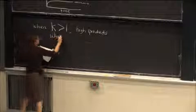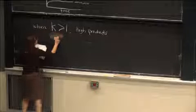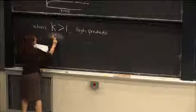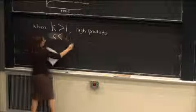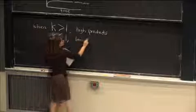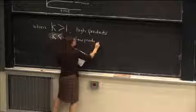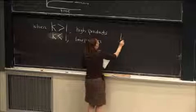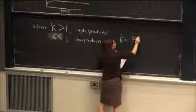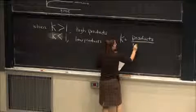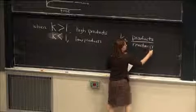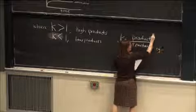When you have K less than 1, we're going to have lower products. So again, think about K in terms of products over reactants at equilibrium.